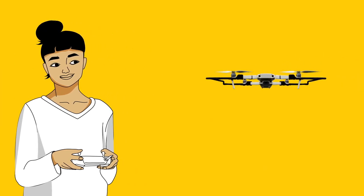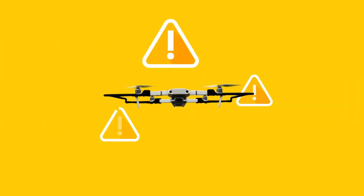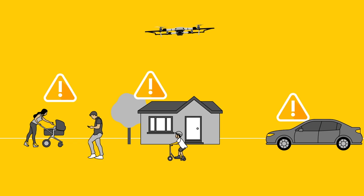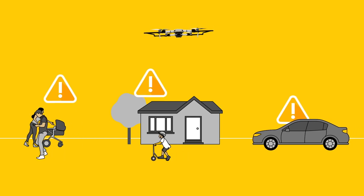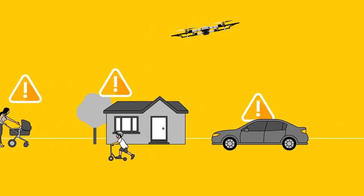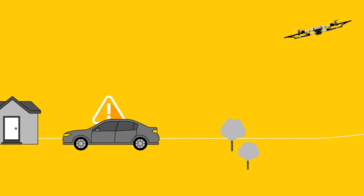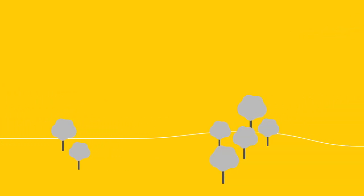If your drone were to fail due to a fault, it could pose a risk to the life, safety or property of a person in the area. So remember to fly your drone away from other people, property and aircraft.